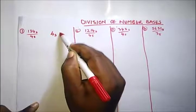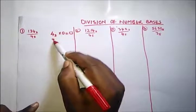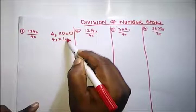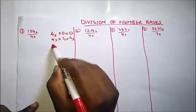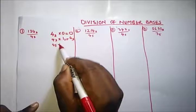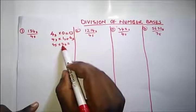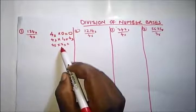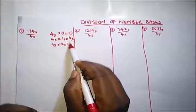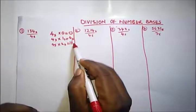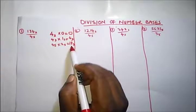So let's create our times table. 4 base 5 times 0 gives us 0. 4 base 5 times 1 base 5 gives us 4 in base 5. 4 base 5 times 2 base 5: that's 4 times 2 equals 8, and 8 is greater than 5. How many times does 5 go into 8? Once, with remainder 3. So 4 times 2 in base 5 is 13 base 5.